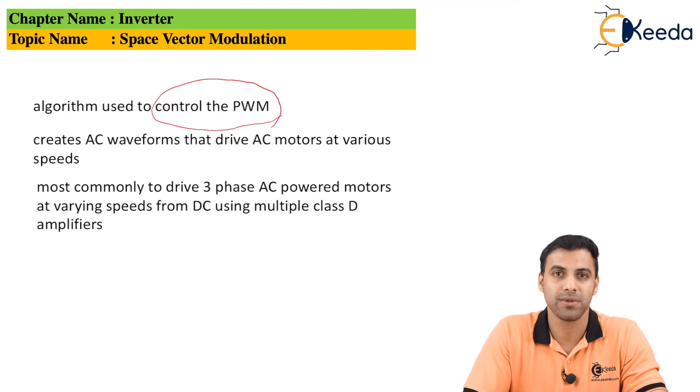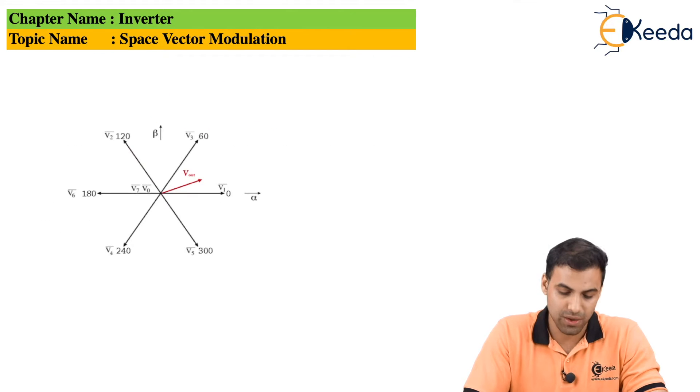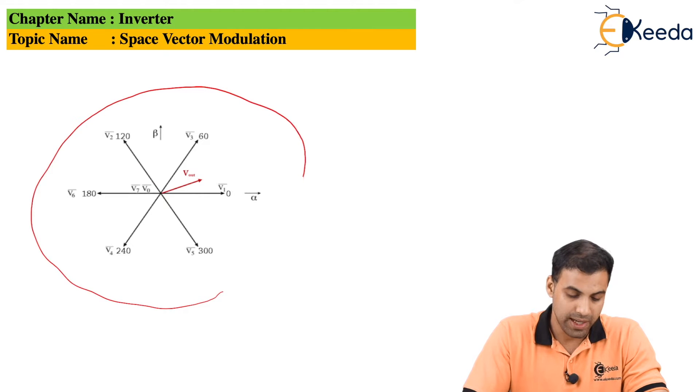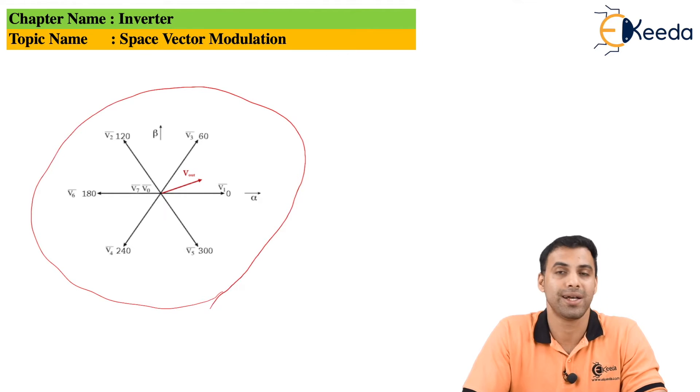It is most commonly used to drive three-phase AC power motors at varying speeds from DC using multiple class D amplifiers. Here there's a small phasor diagram to represent the space vector modulation.